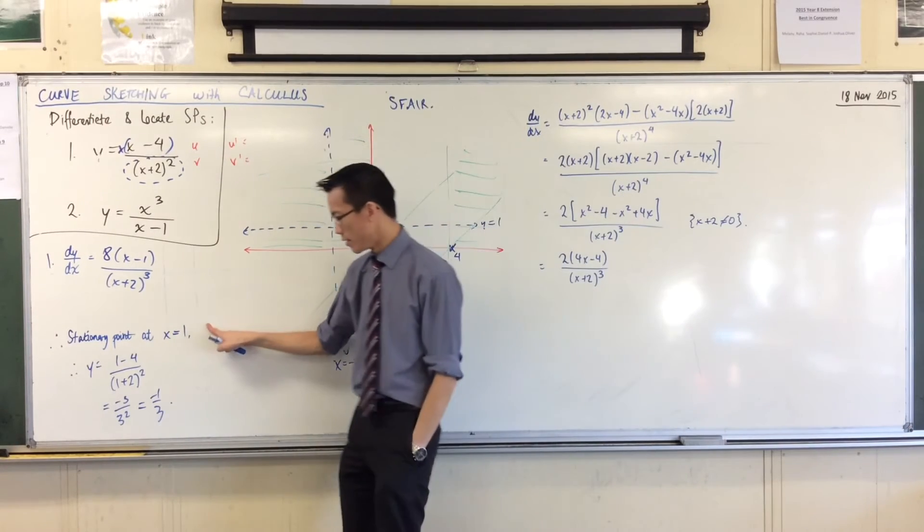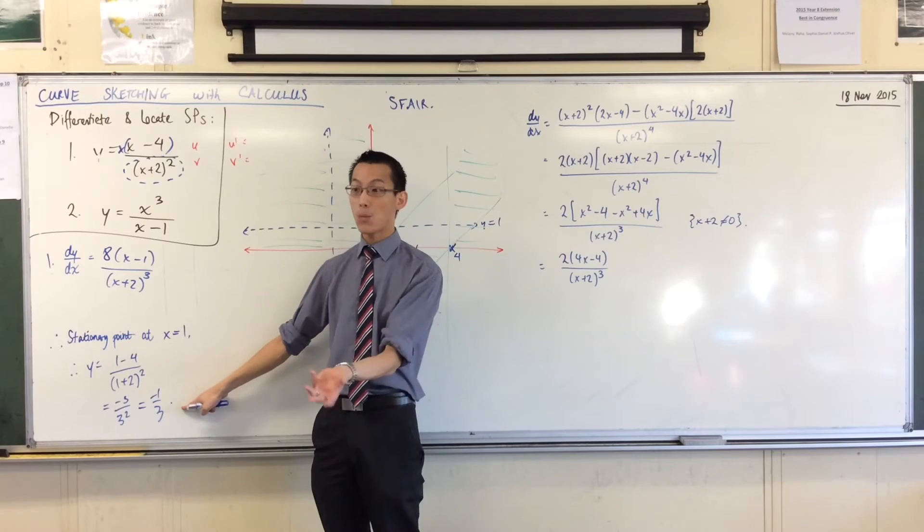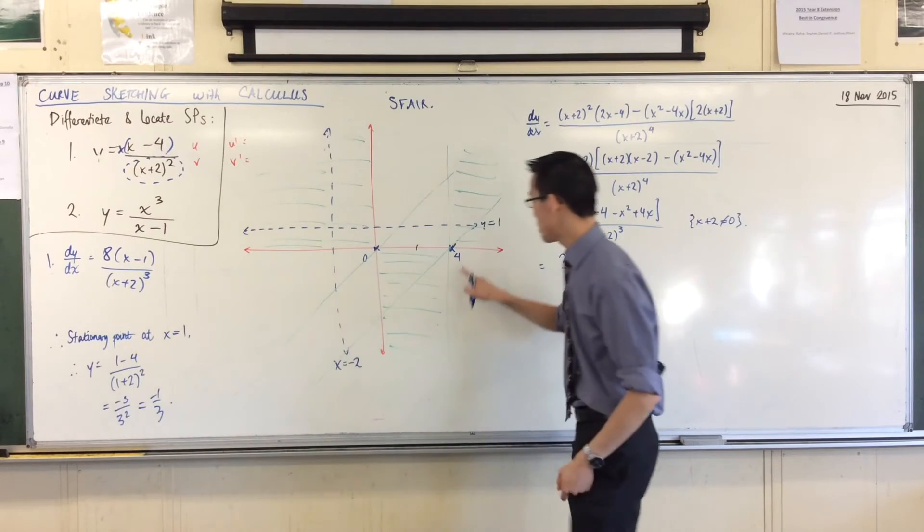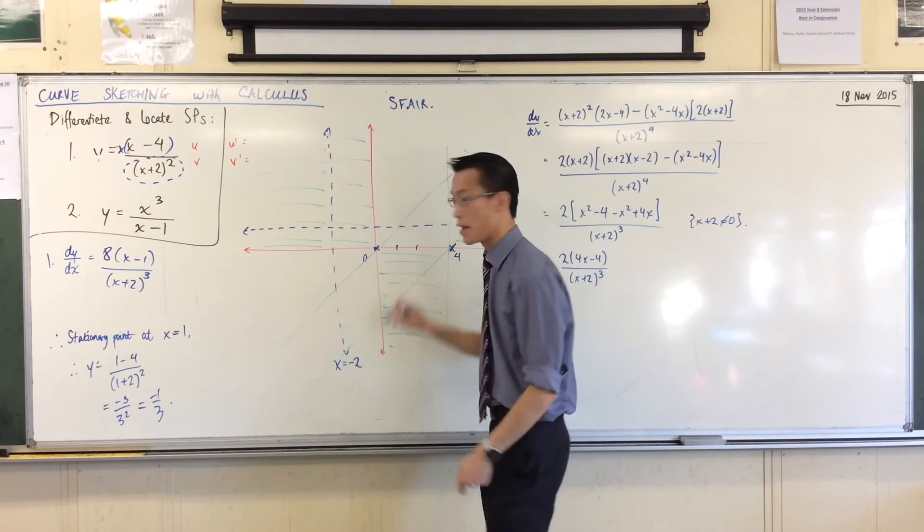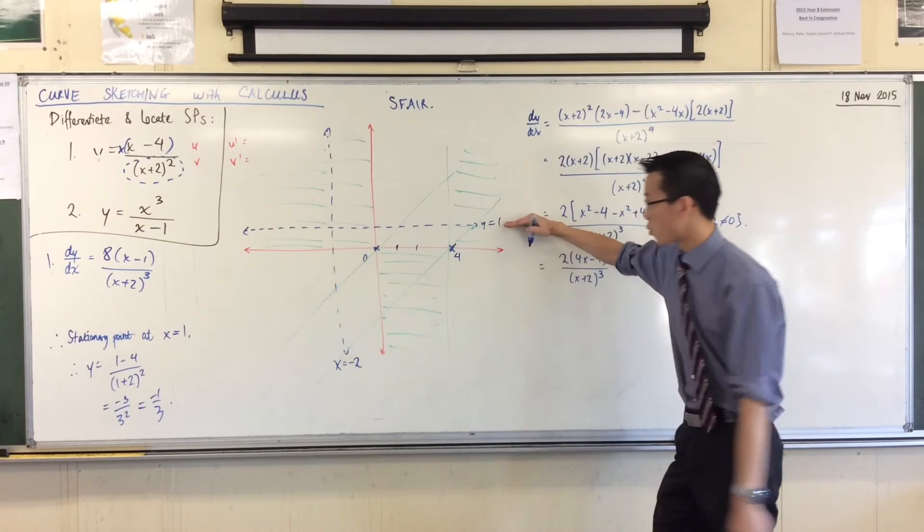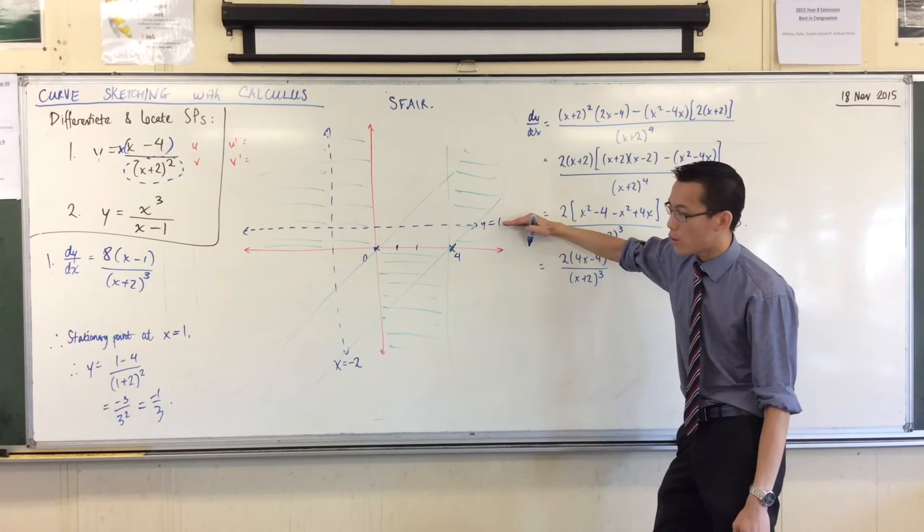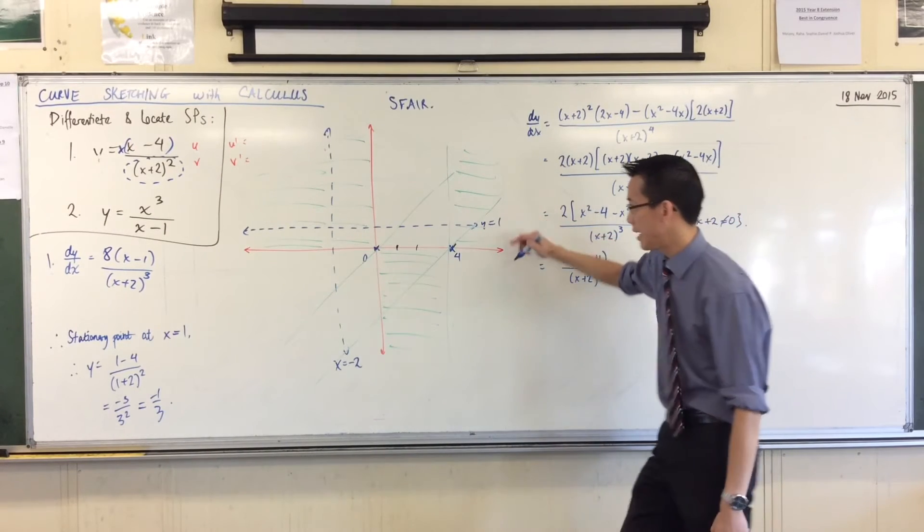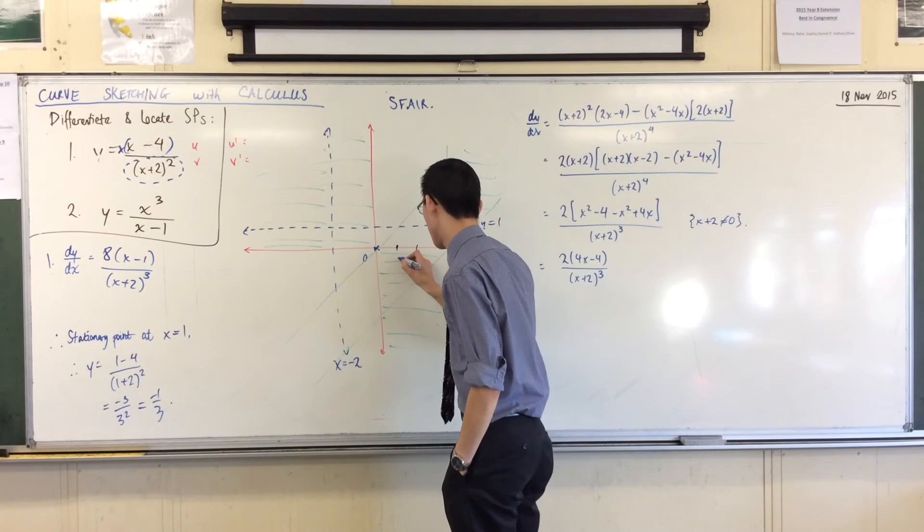It's at 1 minus 1 third. Now, does that fit with the picture that we've got already? Well, this is 4, that's 2, so 1 would be about there. And if I said that that's y equals 1, then y equals negative 1 third would be, well, I don't know, something like that.